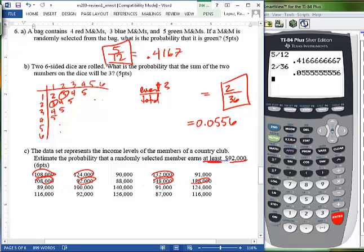Six, seven, eight, nine, ten, eleven, $92,000 again, twelve, thirteen, fourteen. So it looks like there are 14 incomes that are at least $92,000.